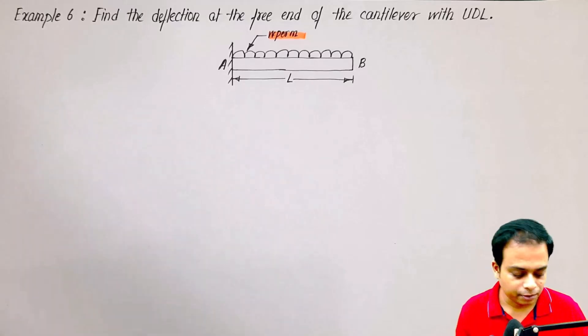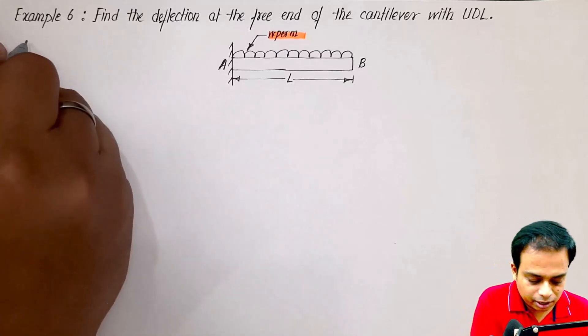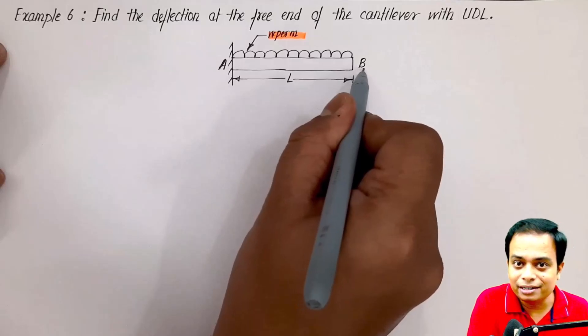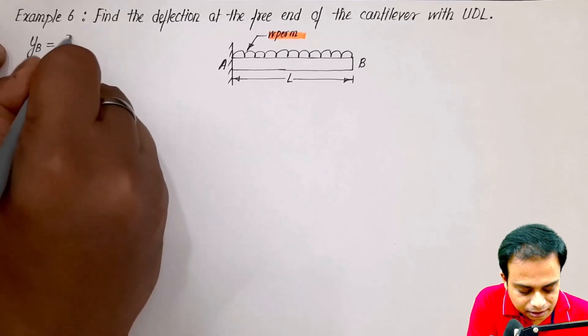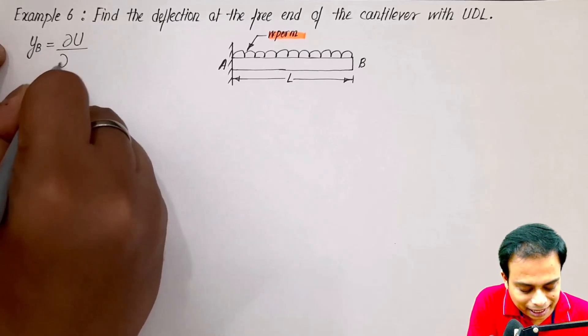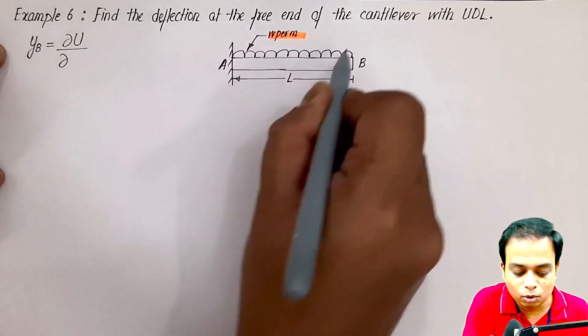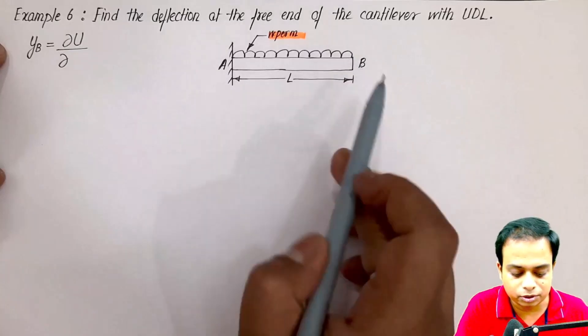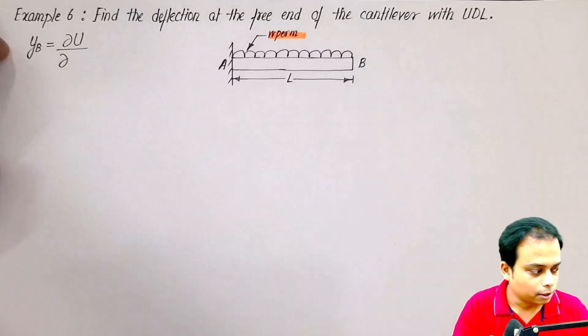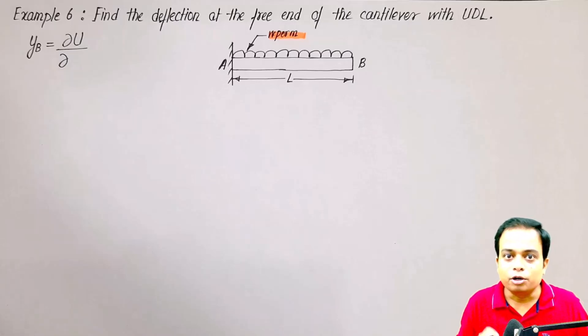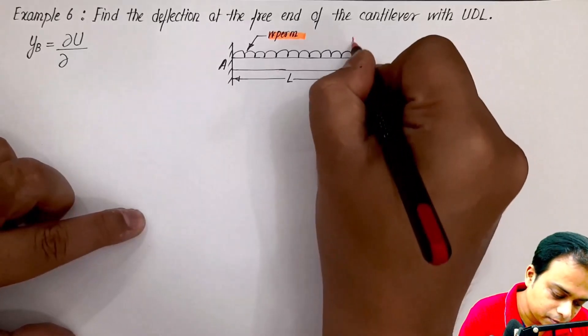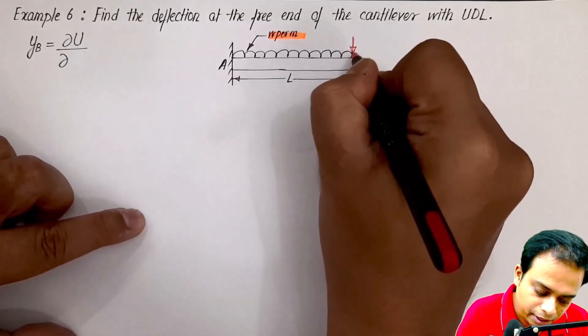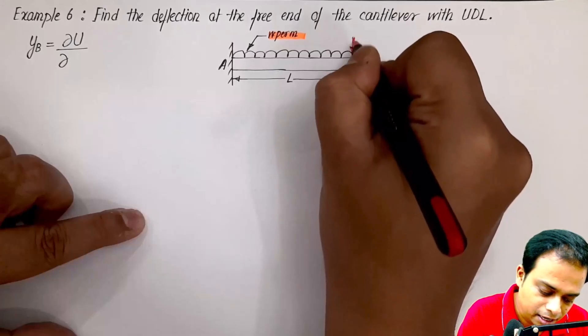We know very well by Castigliano's theorem, if we want to find the deflection at this very point B, yb can be written as del u by del of a load. That load should be acting over here. Do you see any load acting at P? No. So what we'll do is we are going to put a fictitious load. That fictitious load will be here, or you may also refer to this as an imaginary load.